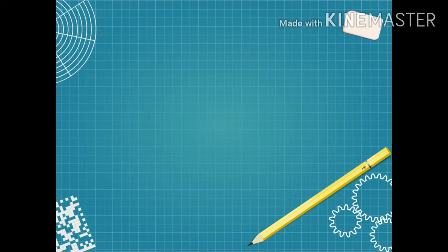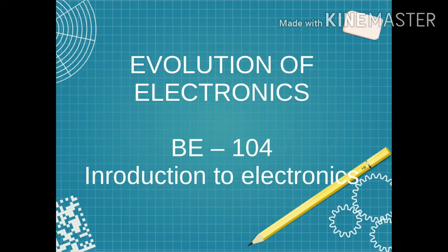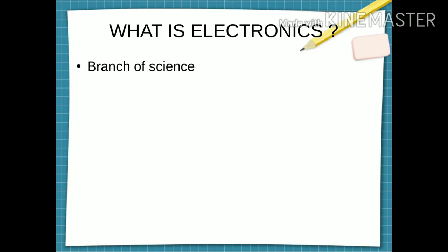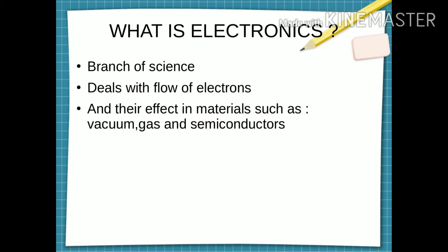So this is evolution of electronics coming under BE104 introduction to electronics. So the first question is, what is electronics? Electronics is simply a branch of science that deals with flow of electrons and their effects in materials such as vacuum, gas and semiconductors.